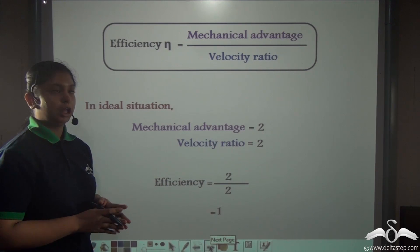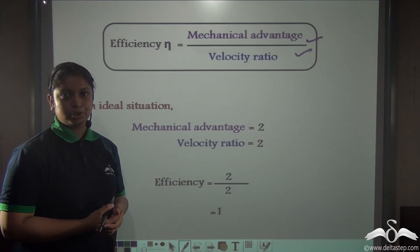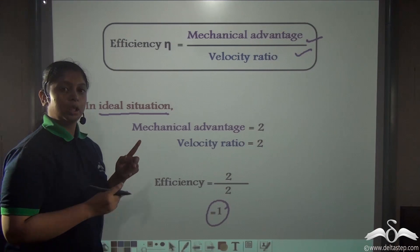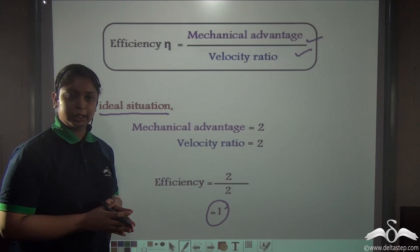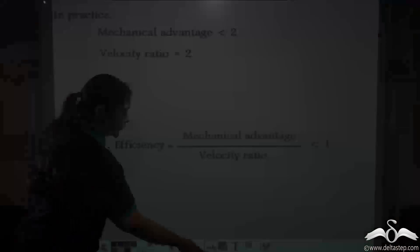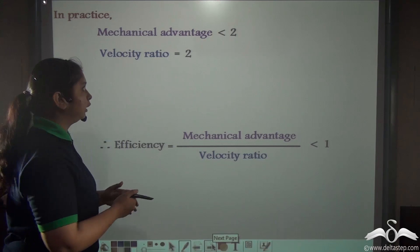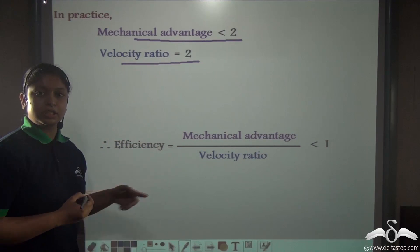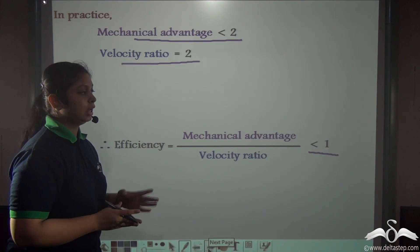Both the mechanical advantage and the velocity ratio of a single movable pulley are equal to 2. Efficiency is the ratio of mechanical advantage to velocity ratio, giving 1, or 100% — but only in an ideal situation where the mass of the pulley, mass of the string, and friction are all neglected. In practical situations, frictional and other resistive forces reduce the mechanical advantage to less than 2, while the velocity ratio remains 2, so efficiency becomes less than 1.